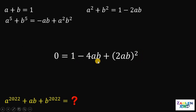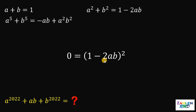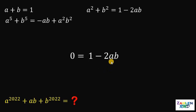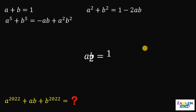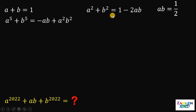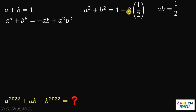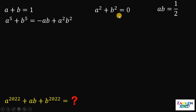Since (1 minus 2ab) squared equals 0, we get 1 minus 2ab equals 0. Adding 2ab to both sides and dividing by 2 gives us ab equals 1/2. Now, substituting ab equals 1/2 into a squared plus b squared equals 1 minus 2ab: 1 minus 2 times 1/2 equals 1 minus 1, which is 0. So a squared plus b squared equals 0.